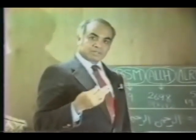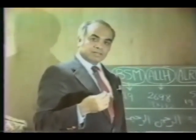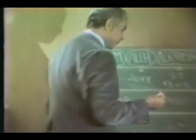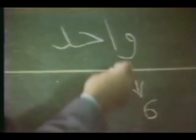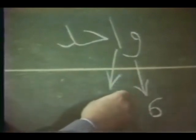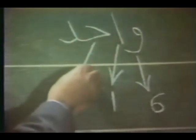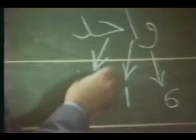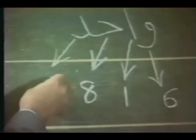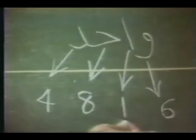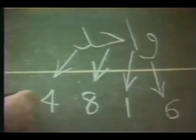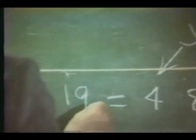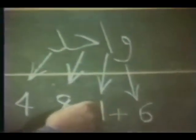Let us look at the word 'wahid' in Arabic and see how its numerical value equals 19. The first letter, W, was six. The letter A represents the numeral one. The letter H represented the numeral eight. Finally, the letter D was four. So: six plus one is seven, seven plus eight is fifteen, fifteen plus four is nineteen — that is the total, the numerical value of the word 'one' in Arabic.